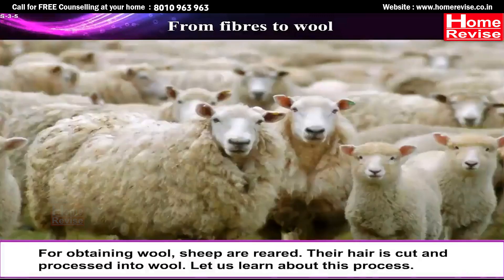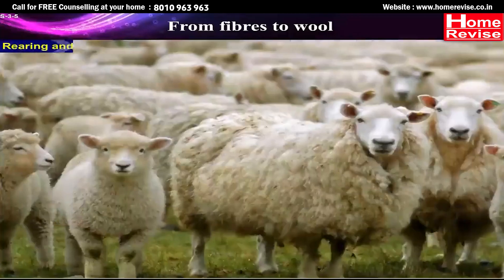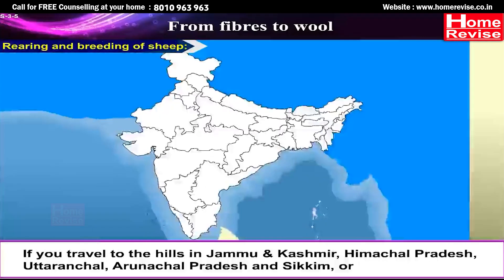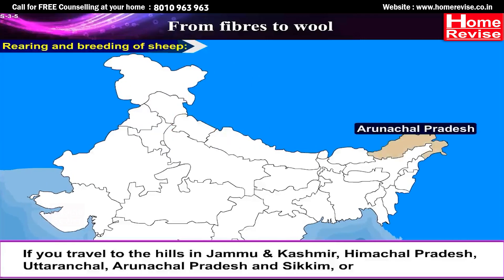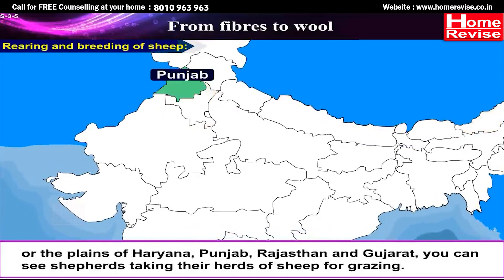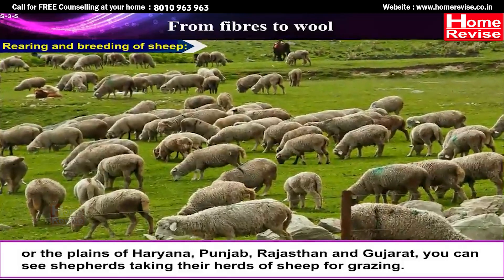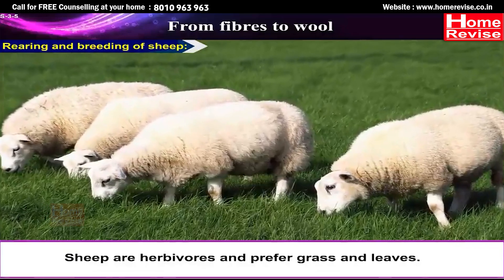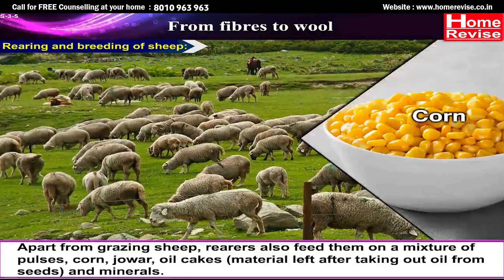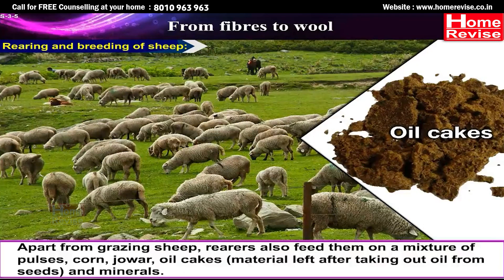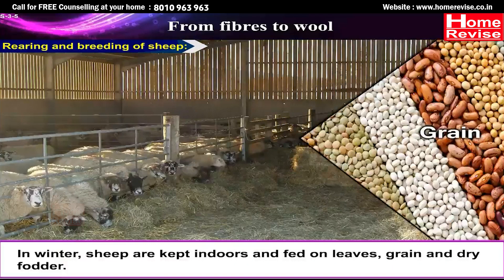For obtaining wool, sheep are reared. Their hair is cut and processed into wool. Sheep are reared in hilly regions such as Jammu and Kashmir, Himachal Pradesh, Uttaranchal, Arunachal Pradesh, and Sikkim, as well as the plains of Haryana, Punjab, Rajasthan, and Gujarat. Sheep are herbivores and prefer grass and leaves. Rearers also feed them on a mixture of pulses, corn, jowar, oil cakes, and minerals. In winter, sheep are kept indoors and fed on leaves, grain, and dry fodder.